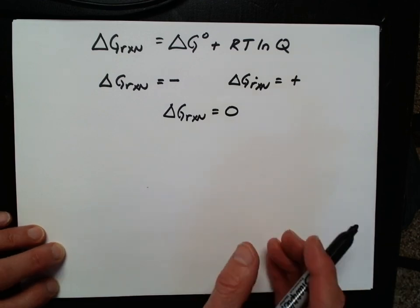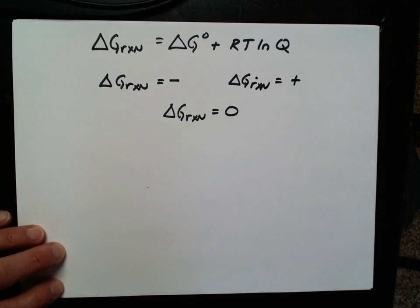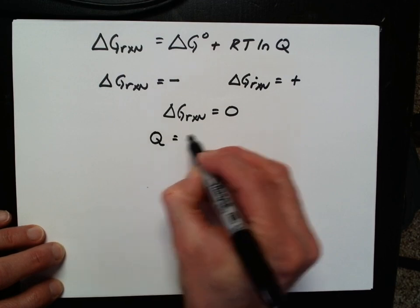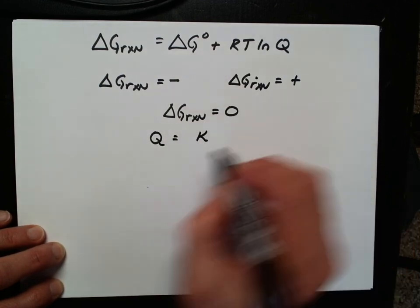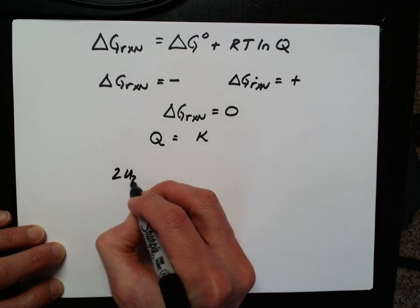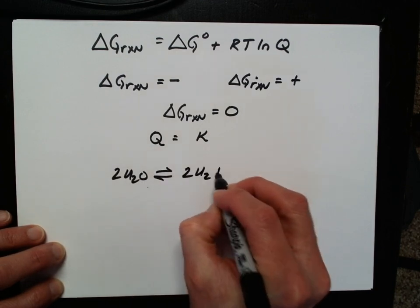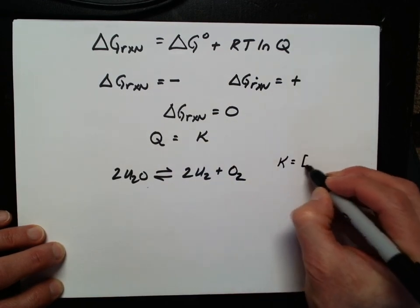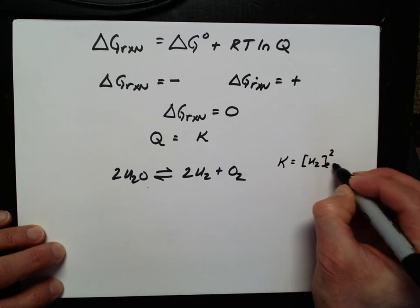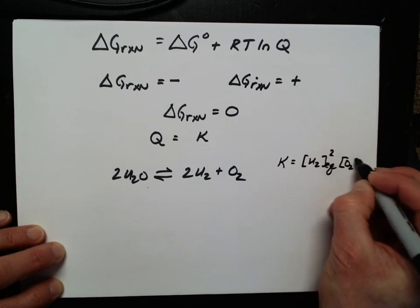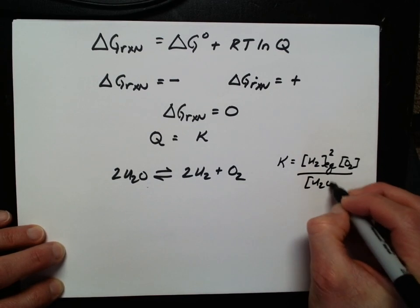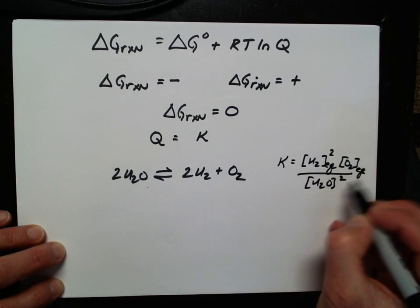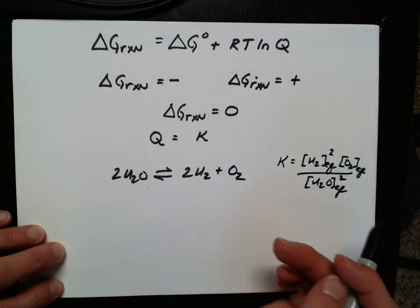Of course, at equilibrium it's happening microscopically in both directions at the same speed. There's a special condition at equilibrium: Q is equal to K. For example, for the reaction 2H₂O reversible with 2H₂ plus O₂ — all gases — K is the concentration of all these things at equilibrium. So when we're at equilibrium, Q and K are the same thing.